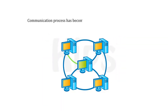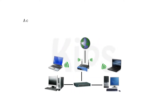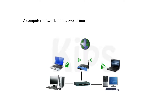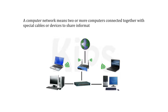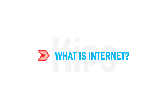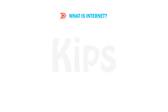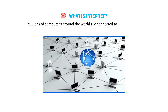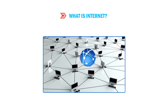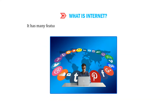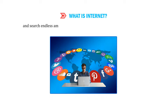The communication process has become easier and faster with the help of computer networks. A computer network means two or more computers connected together with special cables or devices to share information. Millions of computers around the world are connected to each other to share information through the internet. Internet stands for International Network. It has many features but is generally used as a means to communicate and search endless amounts of information from unlimited sources.